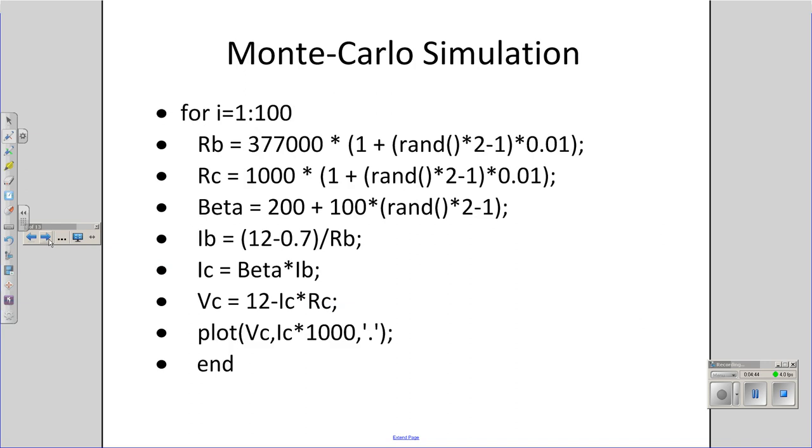Before that, there's a thing called the Monte Carlo simulation. What you do is just pick a random number for the resistance. If the base resistance is ideally 377K, I'm going to modify that by 1%. And MATLAB, the RAND function, generates a number between 0 and 1. If I multiply by 2 and subtract 1, that gives me a random number between minus 1 and plus 1. If I multiply by 0.01 and add 1, that gives you altogether plus or minus 1%. So I now have RB is a resistor which is nominally 377K, give or take 1%. RC likewise, I'm going to make it nominally 1K, plus or minus 1%. Beta is nominally 200, plus or minus 100.